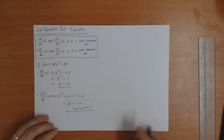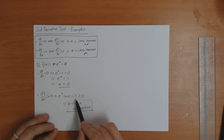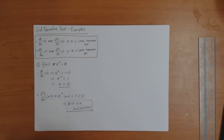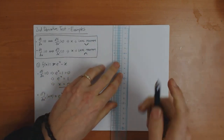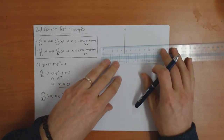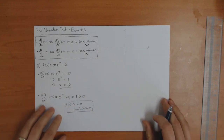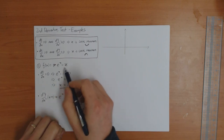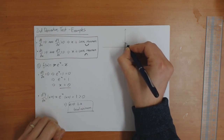For this function it was quite simple. We got one point where the gradient is zero, that's x equals zero. At this point the second derivative is positive, which means we've got a minimum. On the problem sheet I ask you to use this information to plot the graph, so I'll do that here. We know it has a minimum at x equals zero, and at that point the function equals one, so I'll mark that on the graph.